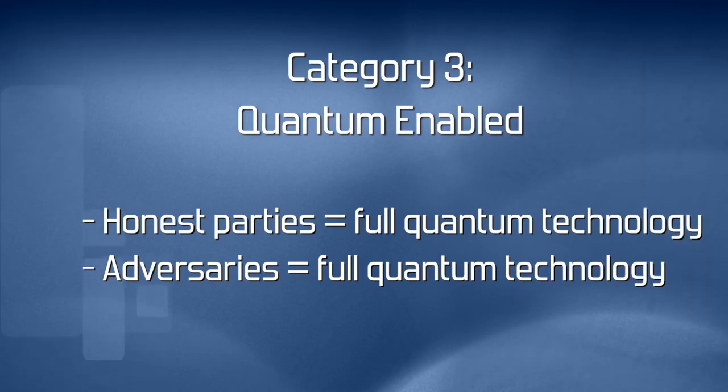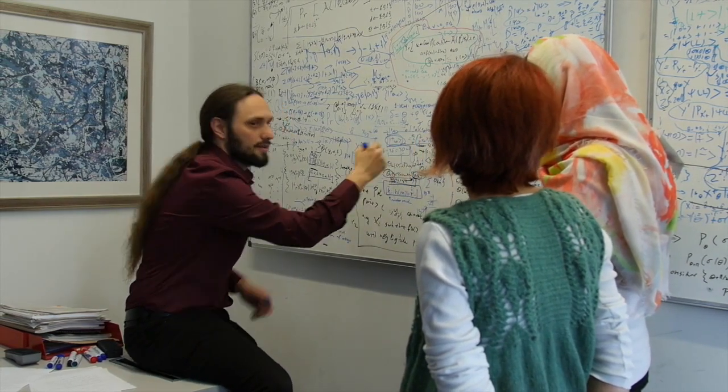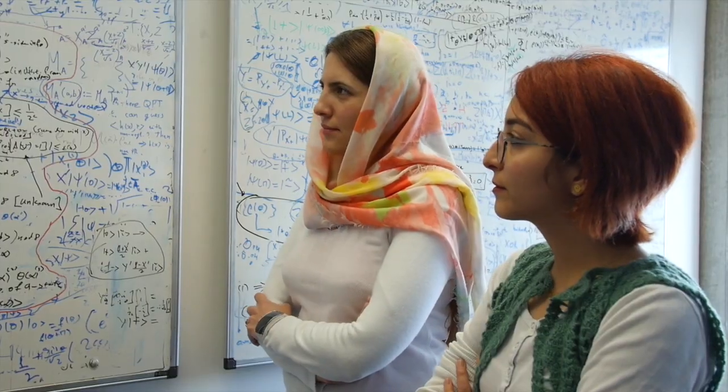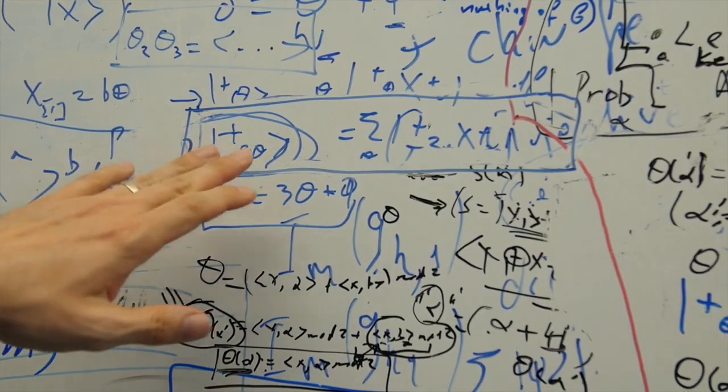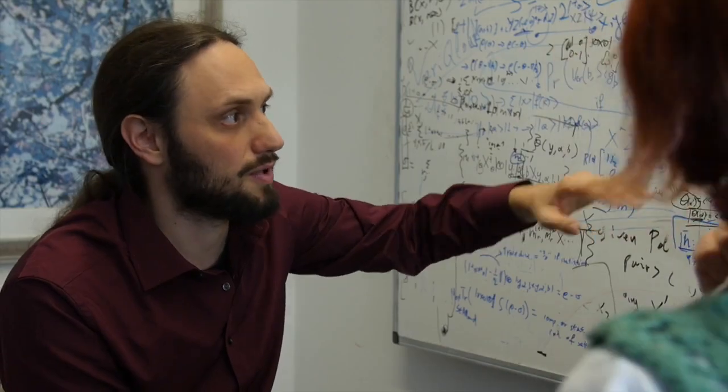The third category is in the setting that now we have large quantum computers that can provide computational speed-up. What we want to ensure is that we can use this extra computational power coming from these new quantum computers in a way that maintains the security, privacy, and reliability of the systems used.